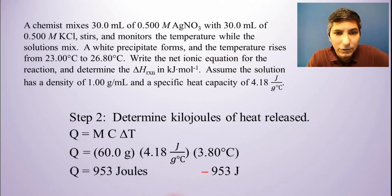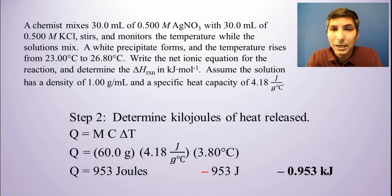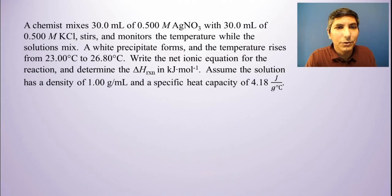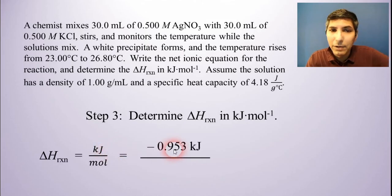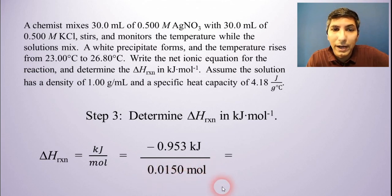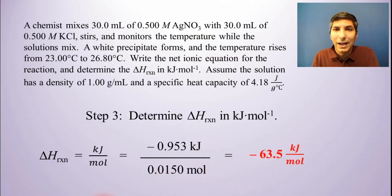Now, if I want to go ahead and change this to kilojoules, that's just, of course, 0.953 kilojoules. So now I'm ready to go right ahead and calculate delta H. So it's kilojoules per mole. So I just got the kilojoules. That's the negative 0.953 kilojoules. And we calculated the moles to be 0.0150 moles. So when I divide the numerator by the denominator, I get an answer of about negative 63.5 kilojoules per mole. That's the delta H of this reaction.